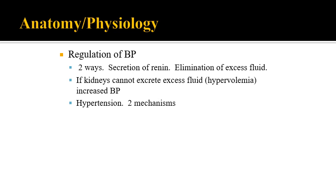The kidneys help regulate blood pressure in two ways. One is through the secretion of renin, which increases vascular resistance by causing vasoconstriction, thereby raising blood pressure. The other is through elimination of excessive fluid, which decreases blood pressure. If the kidneys cannot excrete excessive fluid, that can cause an increase in blood pressure.